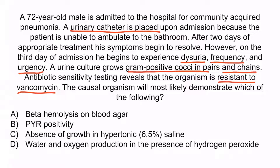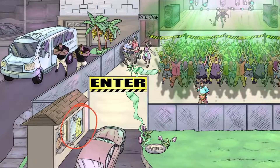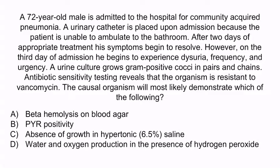The correct answer is B, PYR positivity. From the image, the raincoat represents PYR positivity — so Enterococcus exhibits PYR positivity. Answer A is wrong because Enterococcus is gamma-hemolytic, not beta-hemolytic. C is wrong because Enterococcus grows well in 6.5% sodium chloride, so it does not show absence of growth in hypertonic saline. D describes the catalase test, and Enterococcus is catalase negative, so D is wrong. The correct answer is B, PYR positivity.